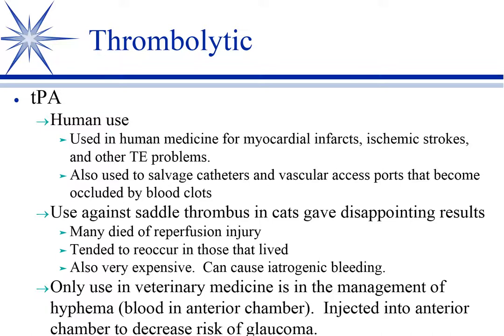The cats that didn't die of shock tended to reoccur because they still had the cardiomyopathy. So it was a nice idea that just didn't work out. I might consider TPA in a pulmonary thromboembolism, but it's very expensive and you always have to worry about iatrogenic bleeding. One of my best friends, a physician himself, had an ischemic stroke, was given TPA, and it immediately relieved signs — but shortly after he developed a hemorrhagic stroke, falling into that 10 to 15% of individuals who experience that as a side effect.